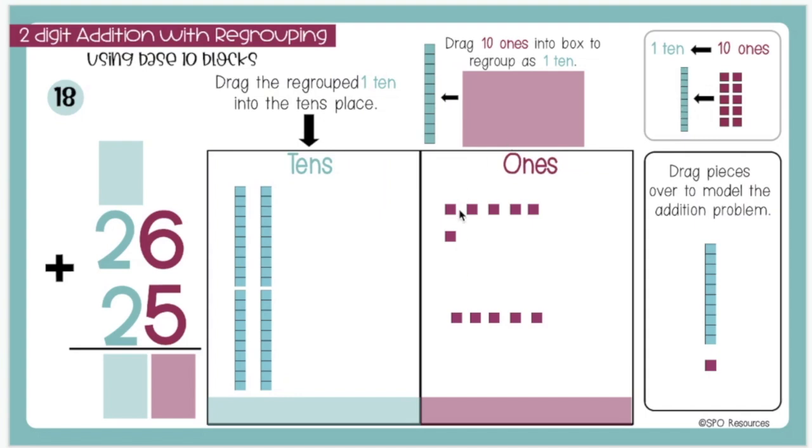In my 1s place, I have 1, 2, 3, 4, 5, 6, 7, 8, 9, 10, 11 1s.